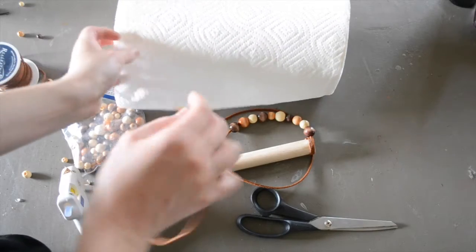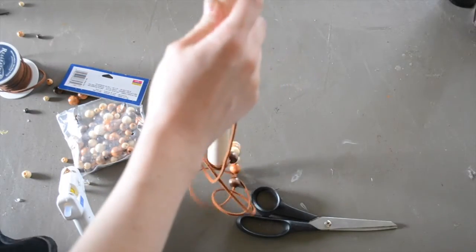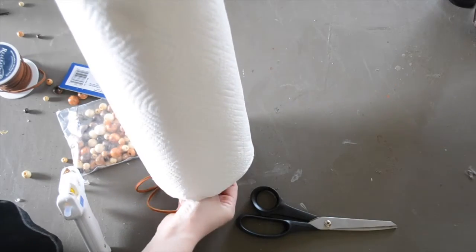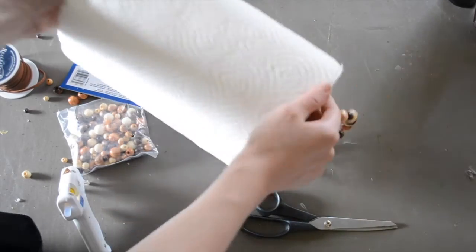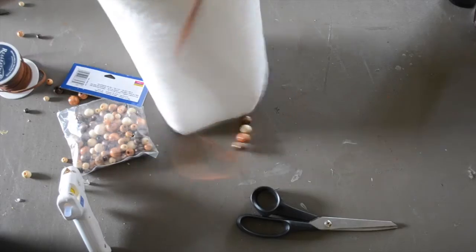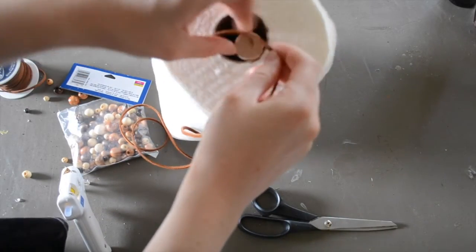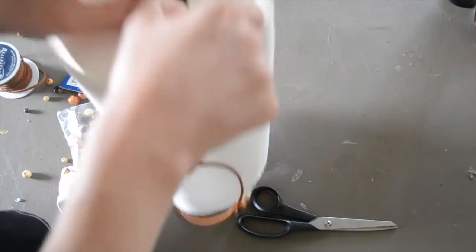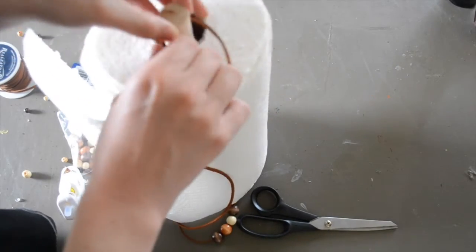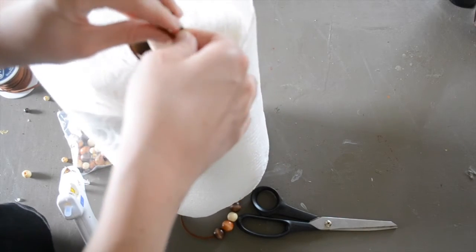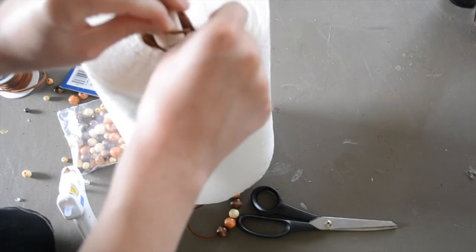So now what you want to do is you want to slide your paper towels onto your dowel. And we're going to tie this end in place. I'm going to pull this up. And you want to double knot it to make sure it stays.